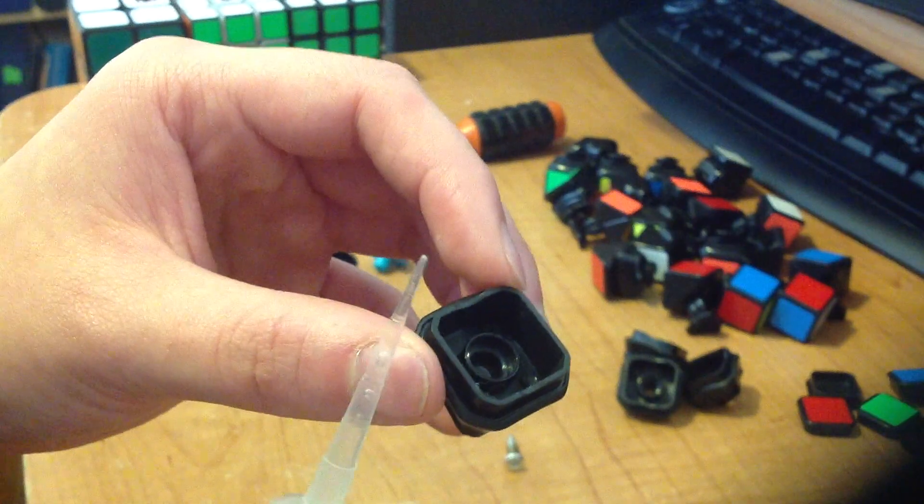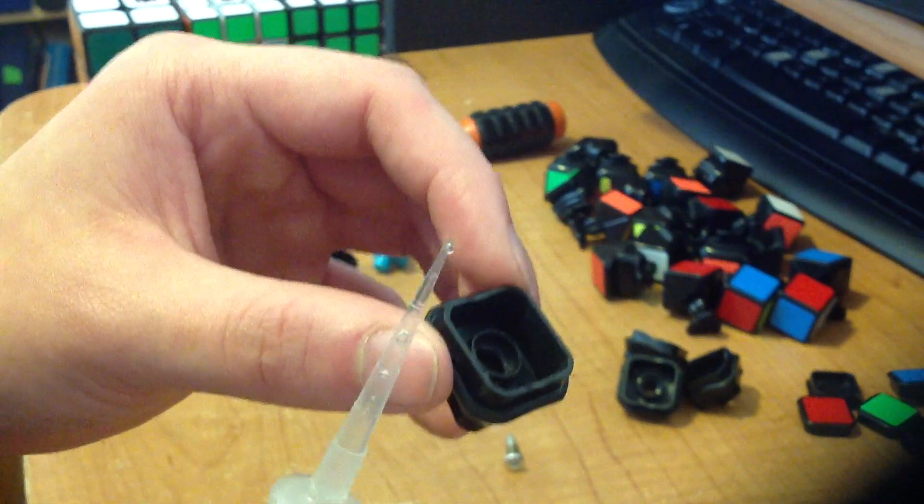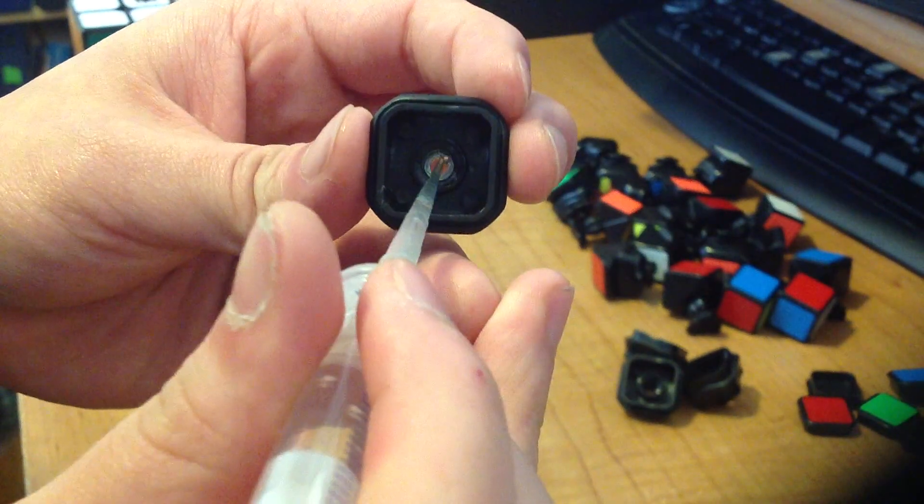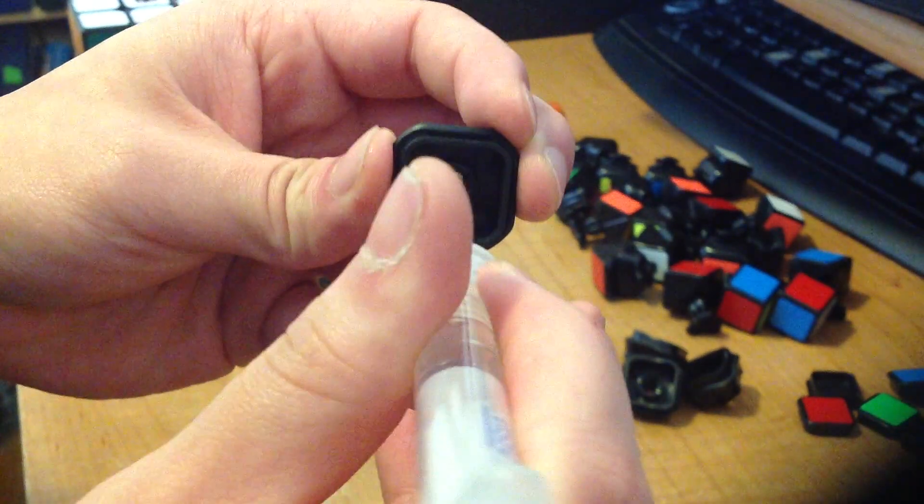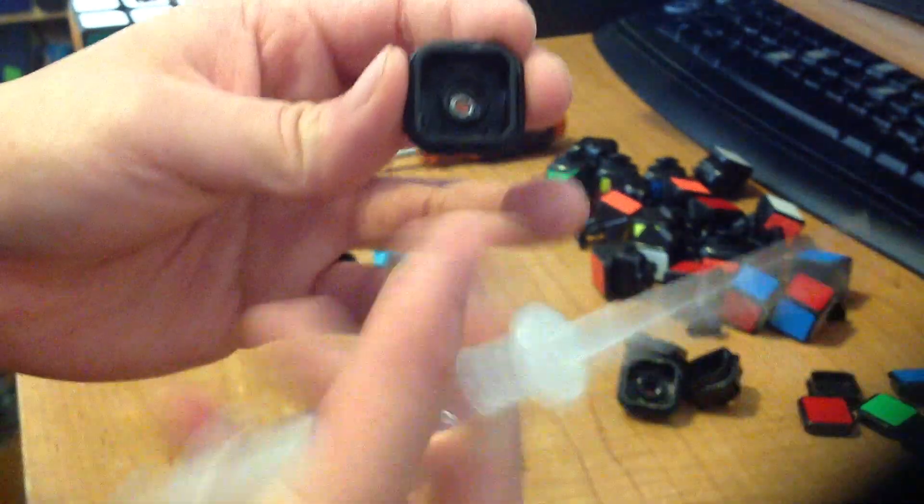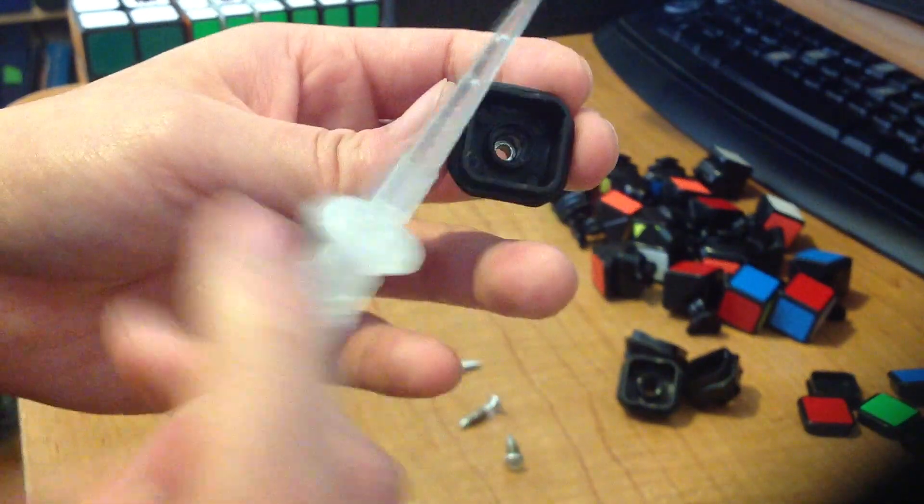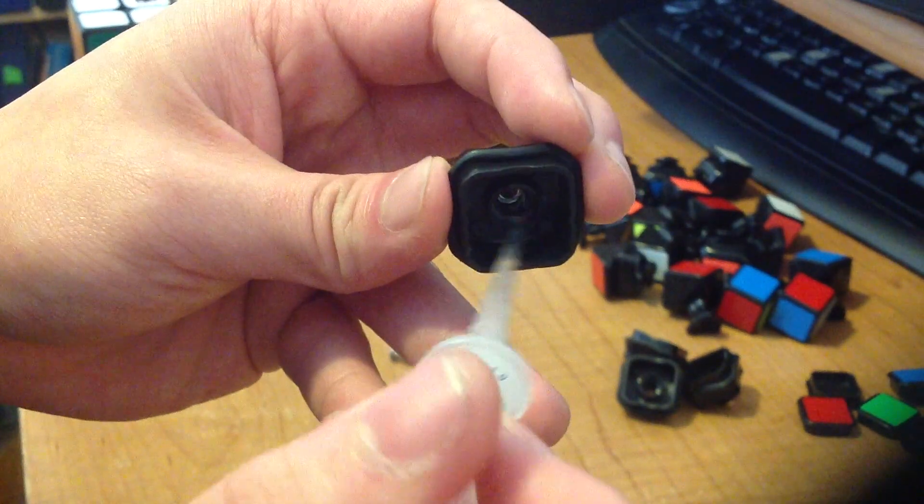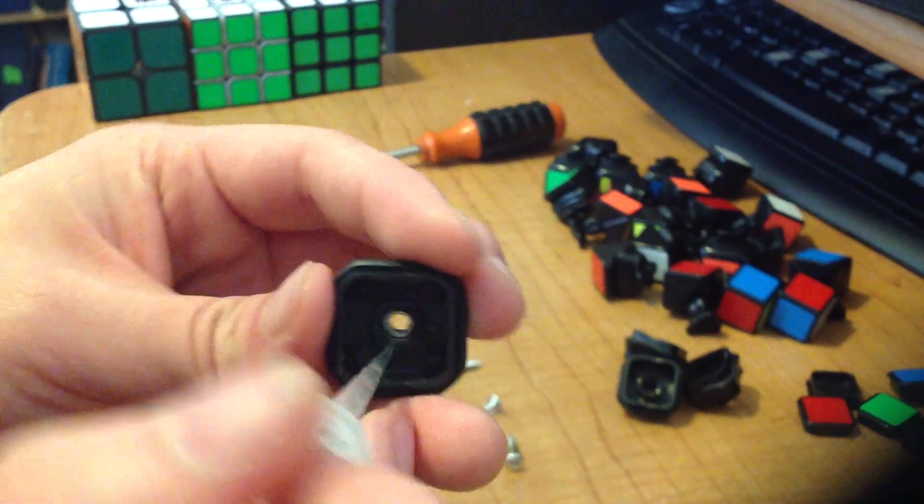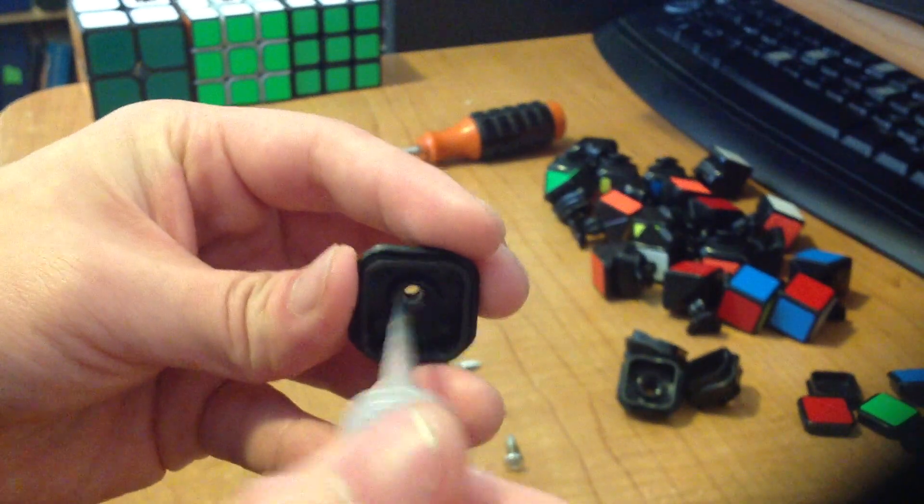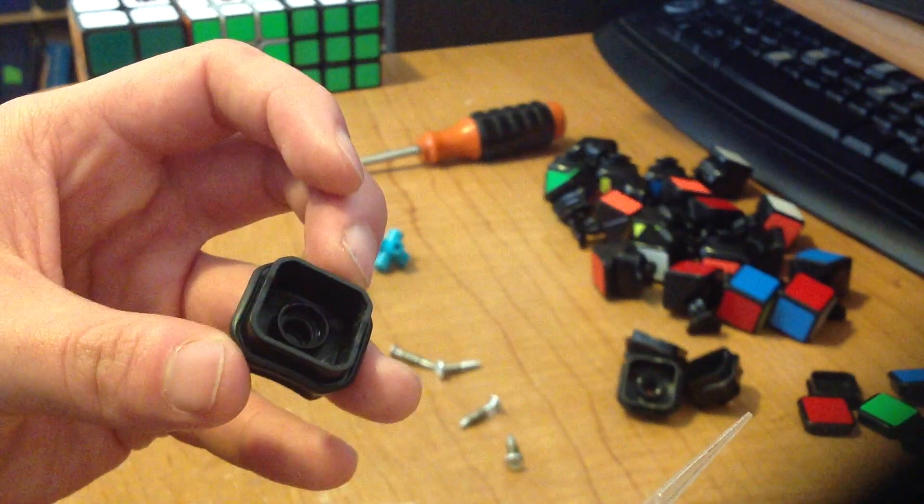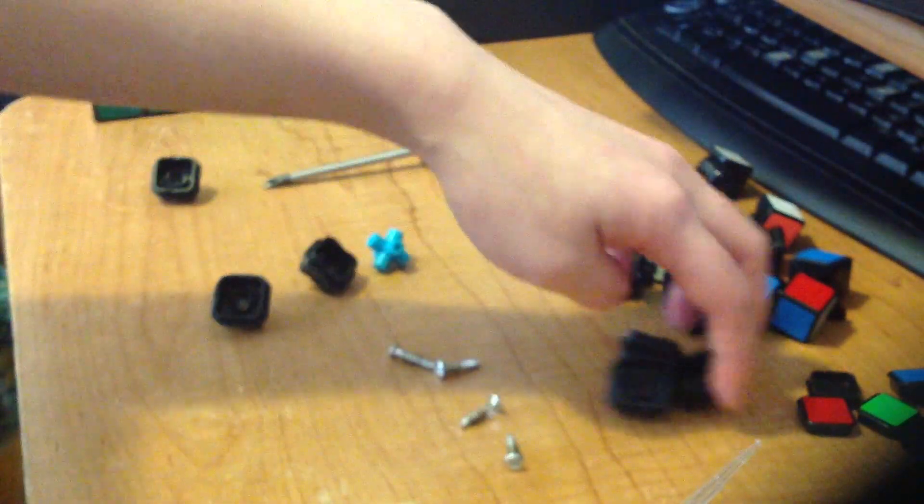And then I take the same amount of lubricant and I put it on top of the washer. So that much lubricant, and I just troll it around the surface of that washer. And then I take the same amount again and I put it on this top ridge, that ridge, where the screw head is usually lying on top of. And then you just repeat that for the other five centerpieces.